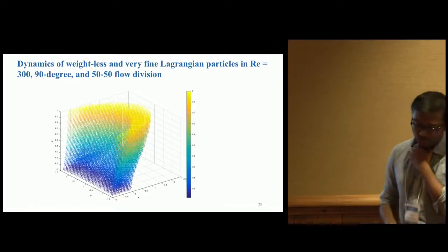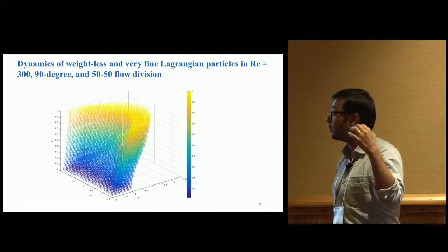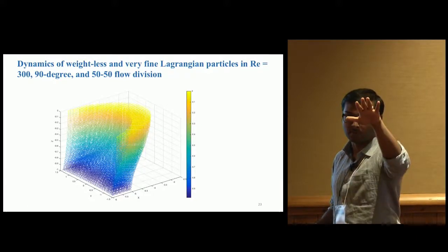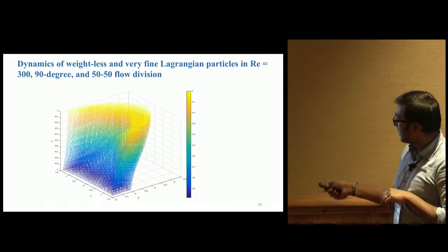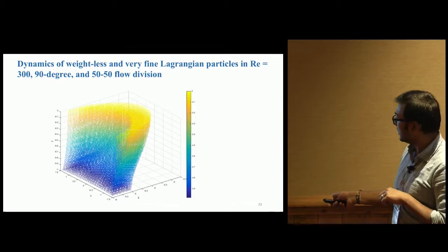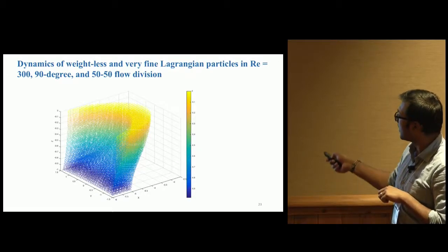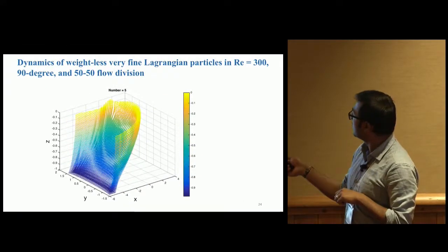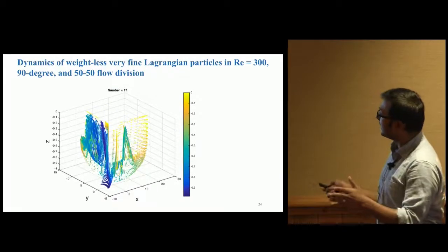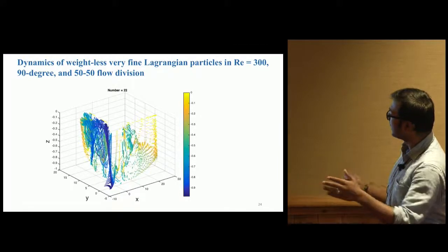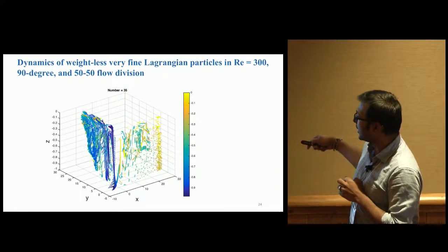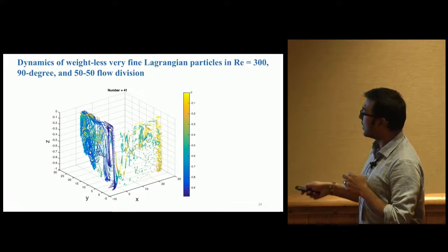How do we quantify it? We took very fine, buoyant Lagrangian particles uniformly distributed throughout the channel. They're colored by distance from bottom - blue at bottom, yellow away from bottom. For Reynolds 300, incoming flow is laminar at 90 degrees with 50-50 split. Almost all blue particles go into the side channel, yellow particles continue into main channel.